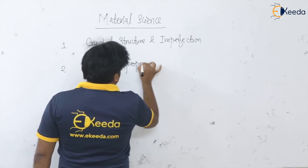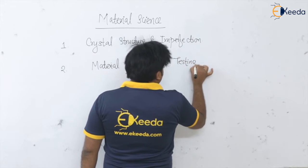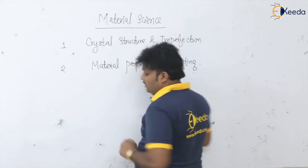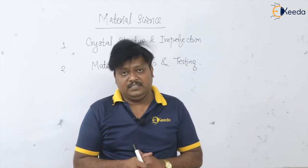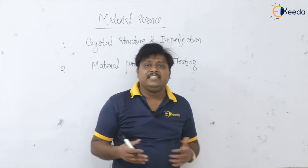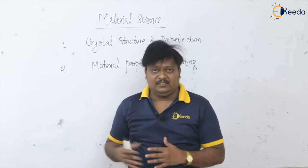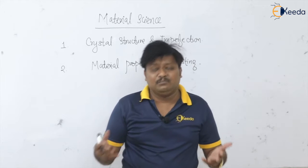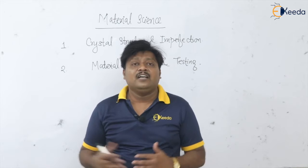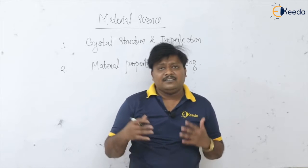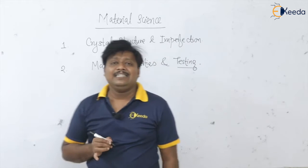After seeing the first topic — crystal structures — we are going to see the second very important topic: material properties and testing. Whichever properties we are going to learn, at the same time we are going to see how that property can be measured. For example, ductility, malleability, hardenability, toughness — how toughness is measured — hardness, what is hardness and how hardness is measured. The testing is also going to be covered in this topic, materials properties.